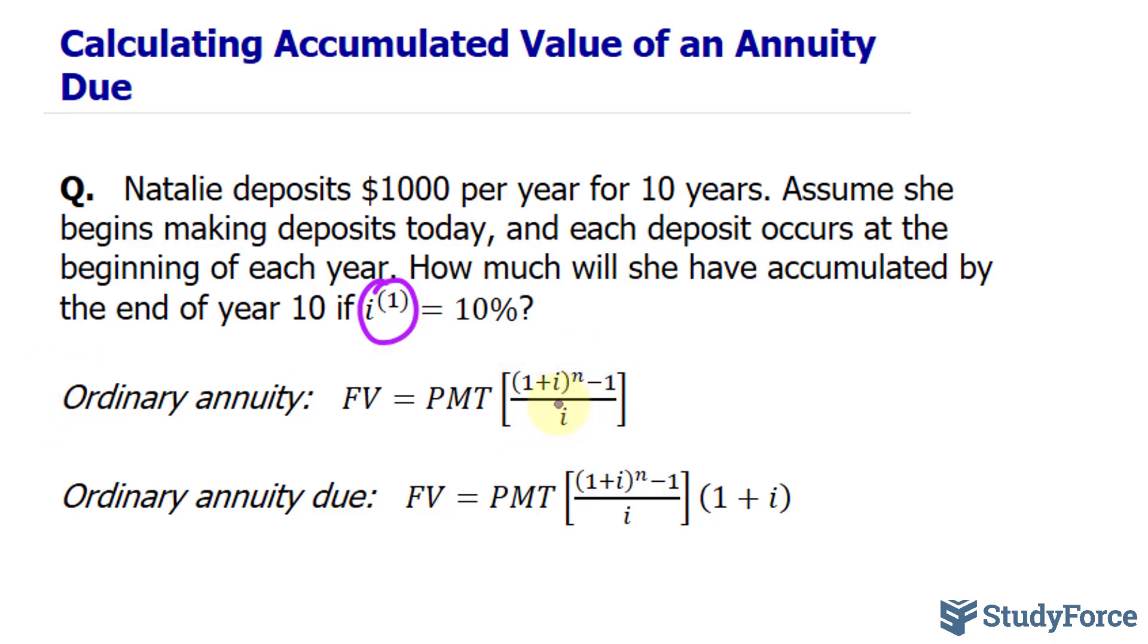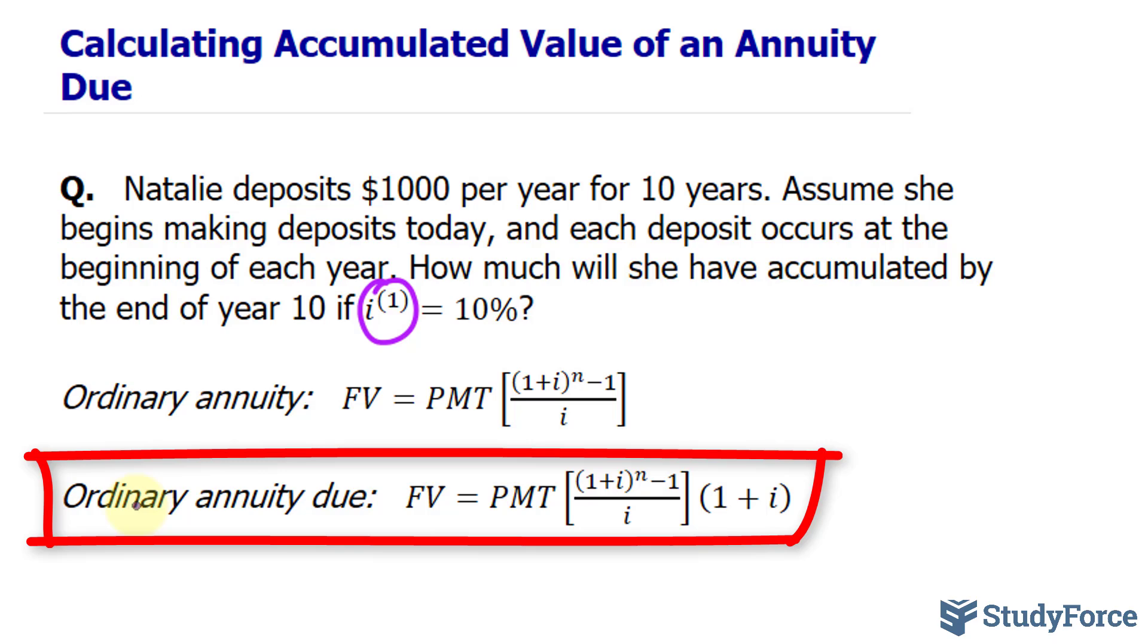The difference here is that the money is being deposited at the beginning of each period. Notice that we've stated that it's today. So we'll be using the ordinary annuity due formula, which looks a little bit different than its counterpart. We have this factor of (1 + i) at the very end.